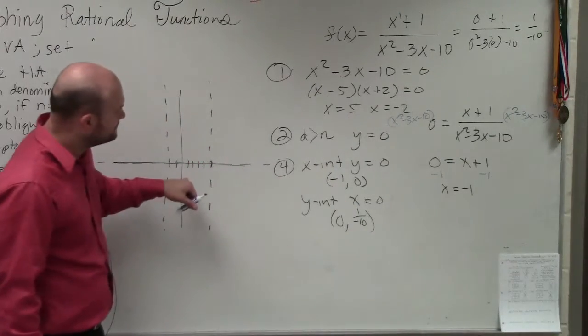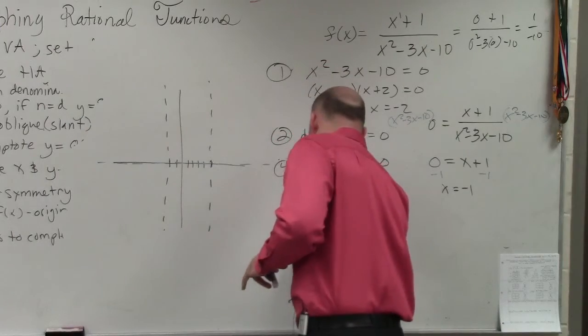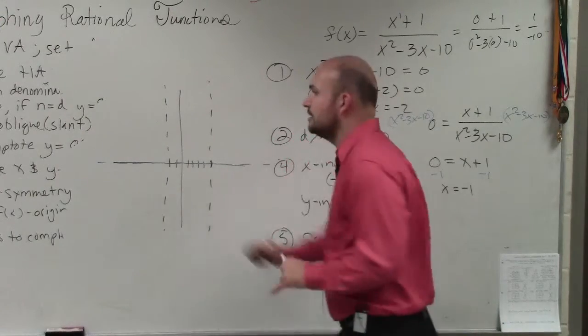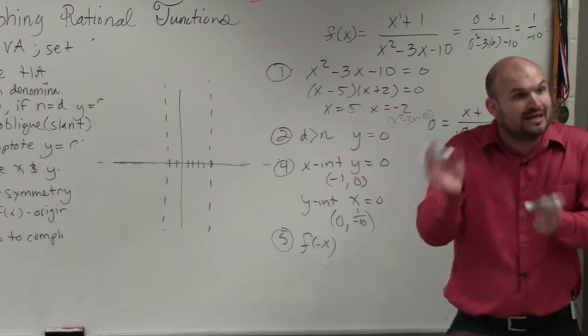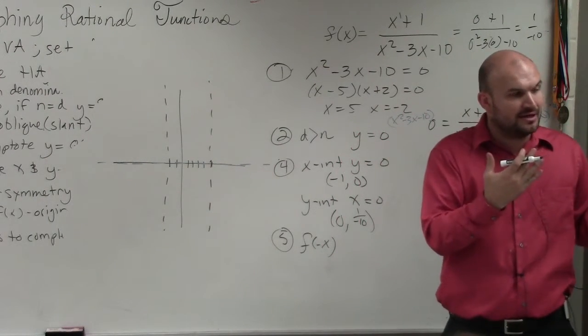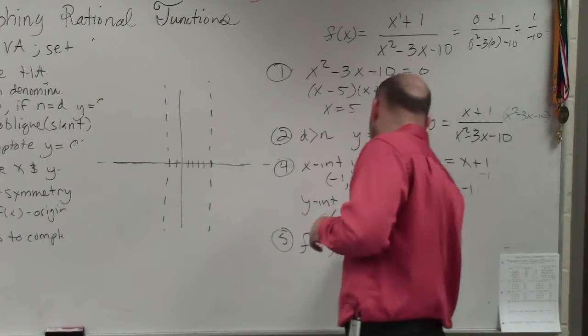Then the next thing is to check for symmetry. To check for symmetry, you plug in f of negative x. Remember, if you get back the exact same function, then it's an even function. It's symmetrical about the y-axis. If you get the opposite of the function, it's symmetrical about the origin, and it's an odd function.